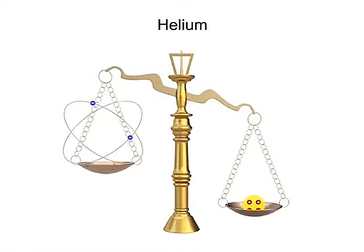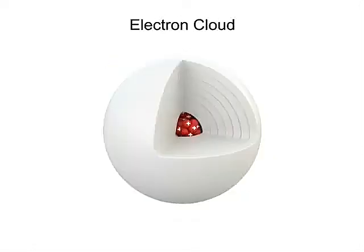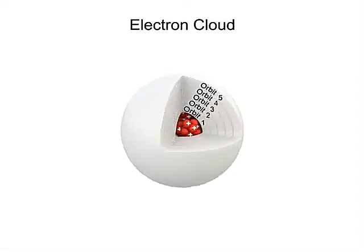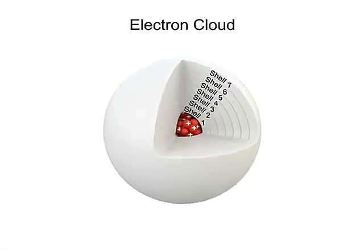Electrons are arranged in the electron cloud by the distance of their orbit from the nucleus. These orbital layers are also referred to as shells.